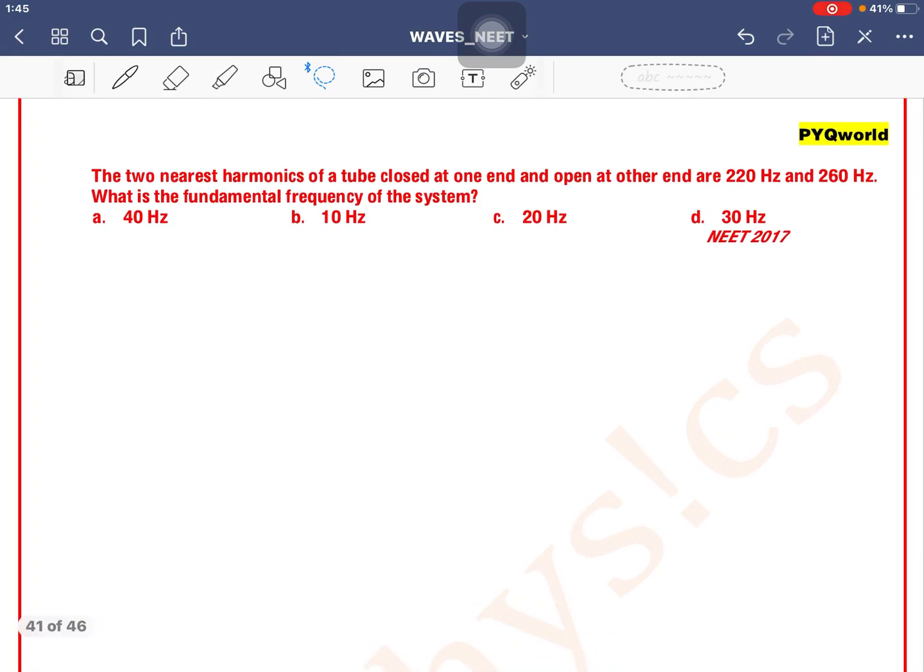The two nearest harmonics of a tube closed at one end and open at the other end are 220 Hz and 260 Hz. What is the fundamental frequency of the system?